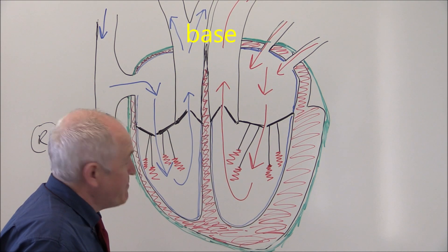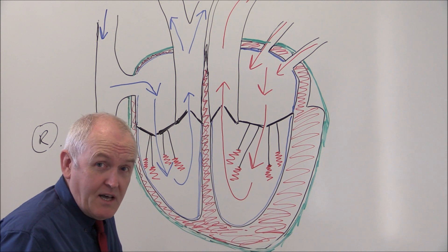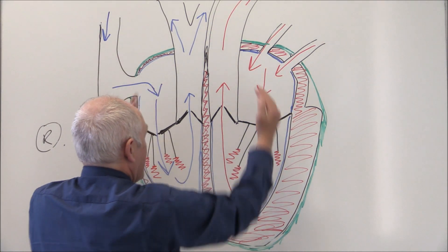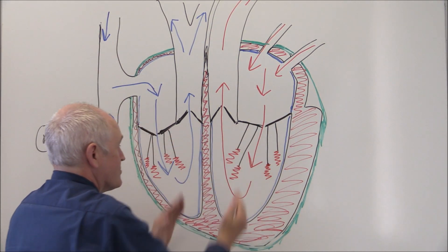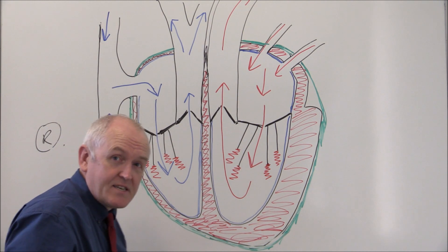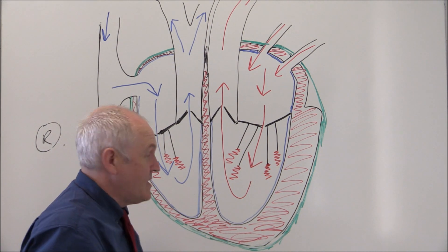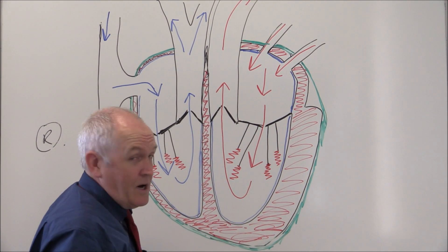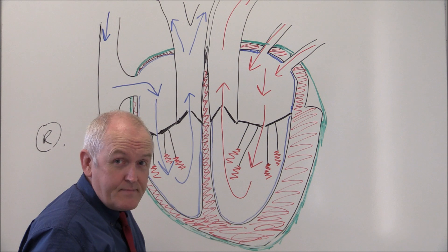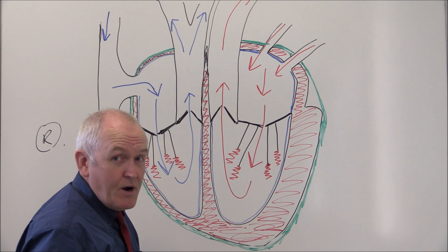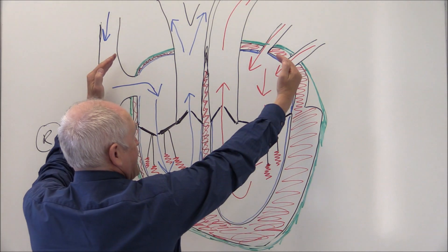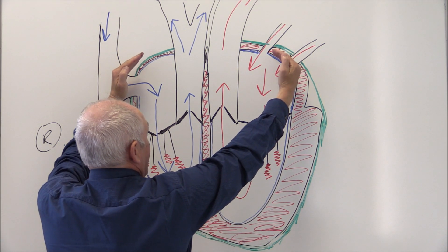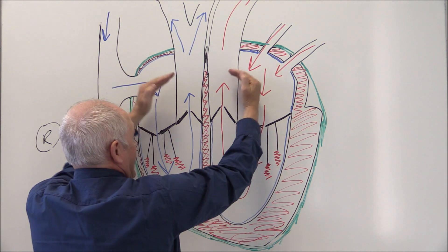An immediate thing to realise is that the atria and the ventricles are contractile because of the contractile myocardium. Both atria will contract at the same time and they will contract downward like that.